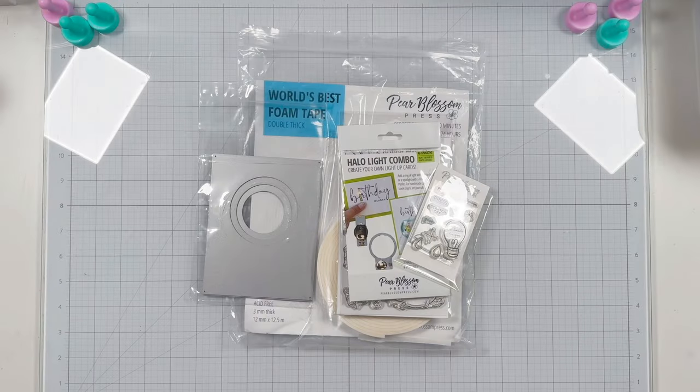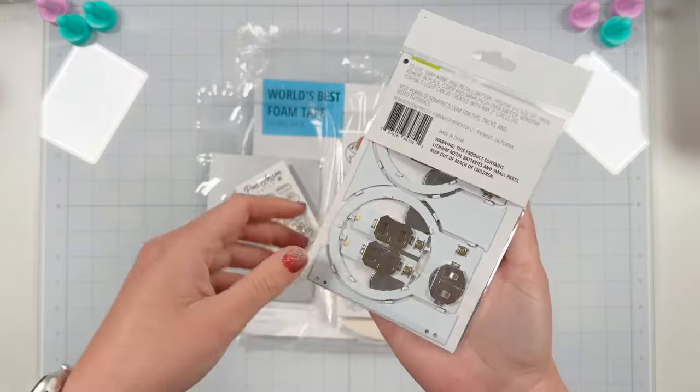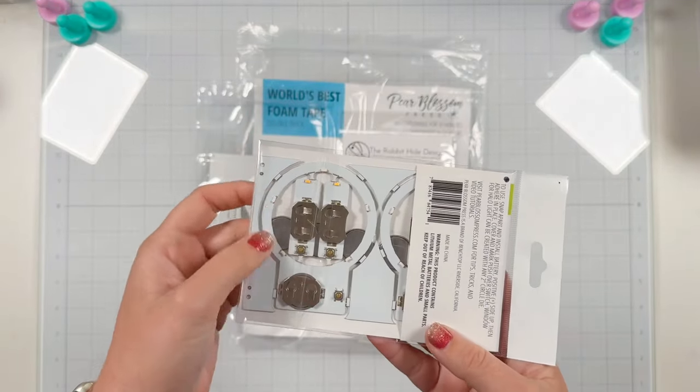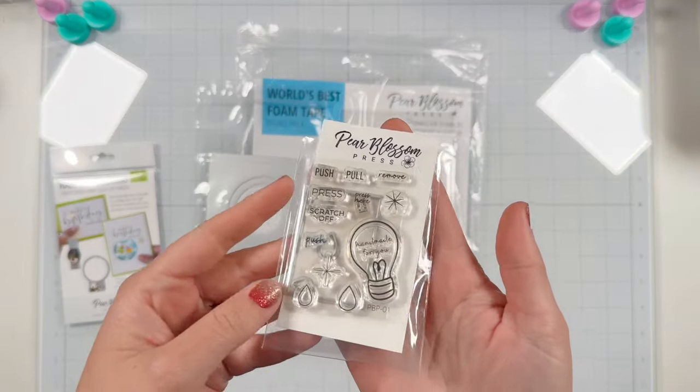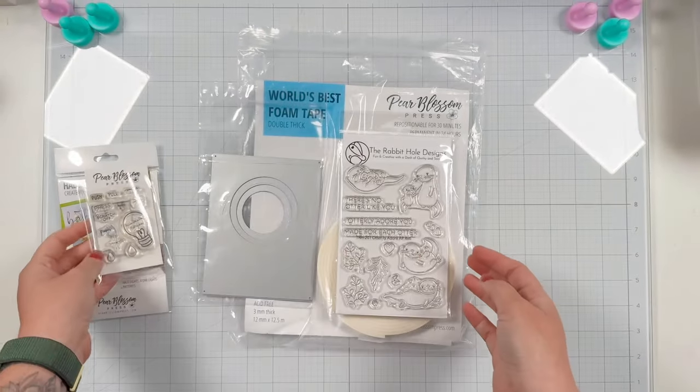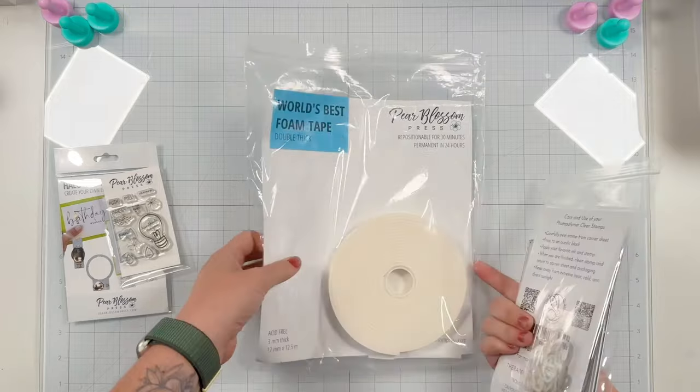Hi friends, it's Lauren Taylor here on the Pear Blossom Press YouTube channel. I have a halo light combo pack which comes with two halo lights and four one lights. I also have my Pear Blossom Press stamp and die bundle and of course my roll of world's best foam tape.